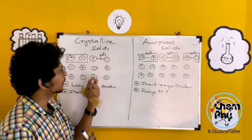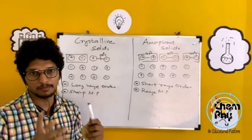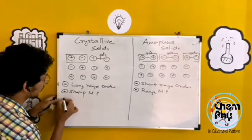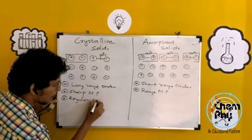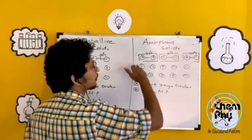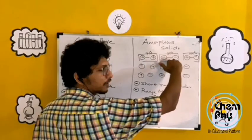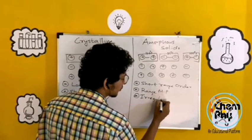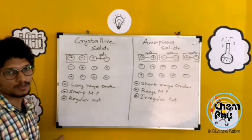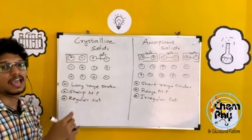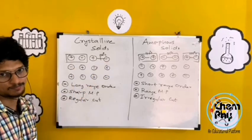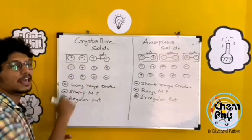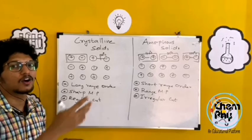Regarding the cleavage property: in the case of crystalline solids, they are cleaved along a definite plane — a regular plane. In the case of amorphous solids, they are cleaved along an irregular plane.